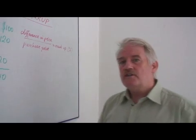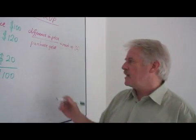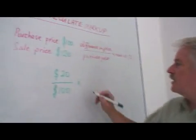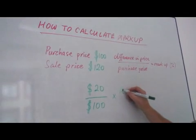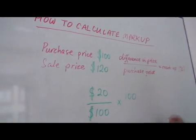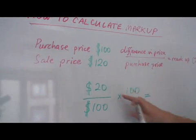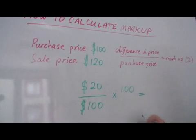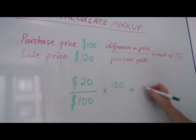Now to work this out as a percentage, which is the normal way it's expressed, I have to multiply this expression by 100. And as we see, we'll get 20 times 100 over 100. So that's quite an easy calculation.